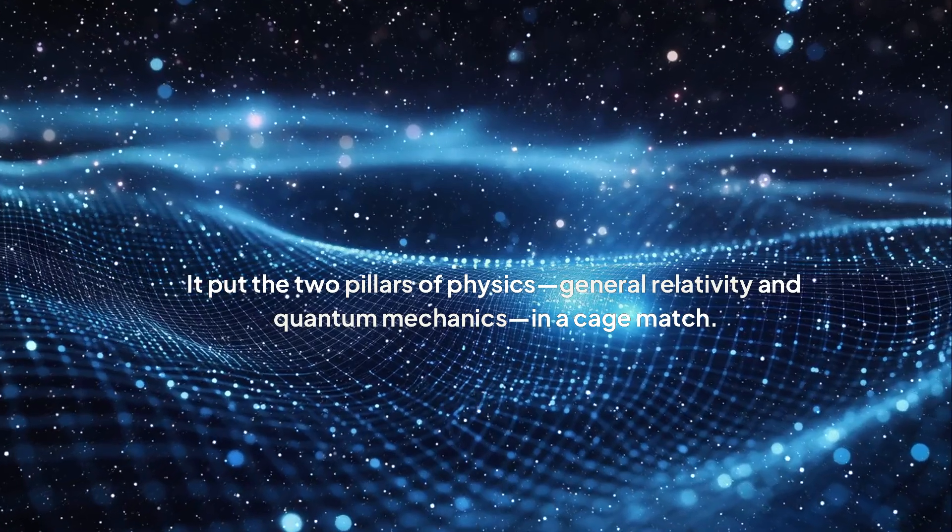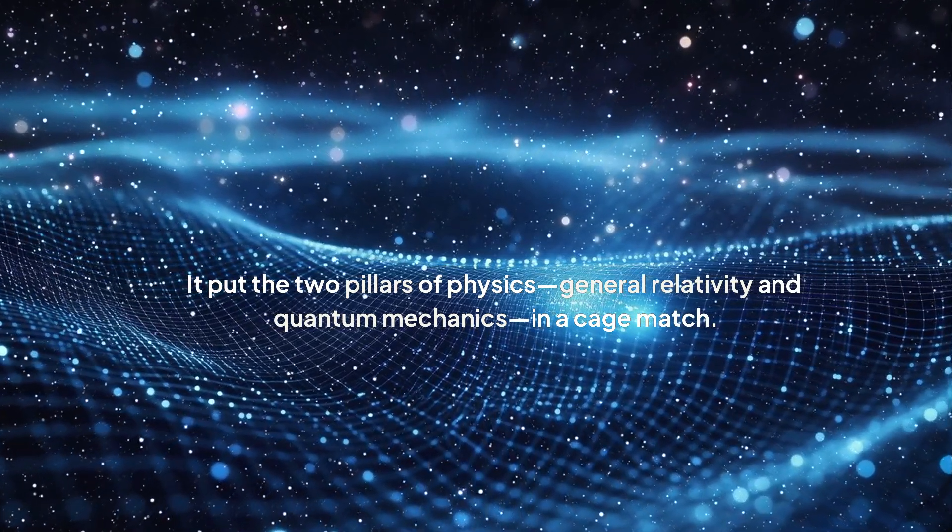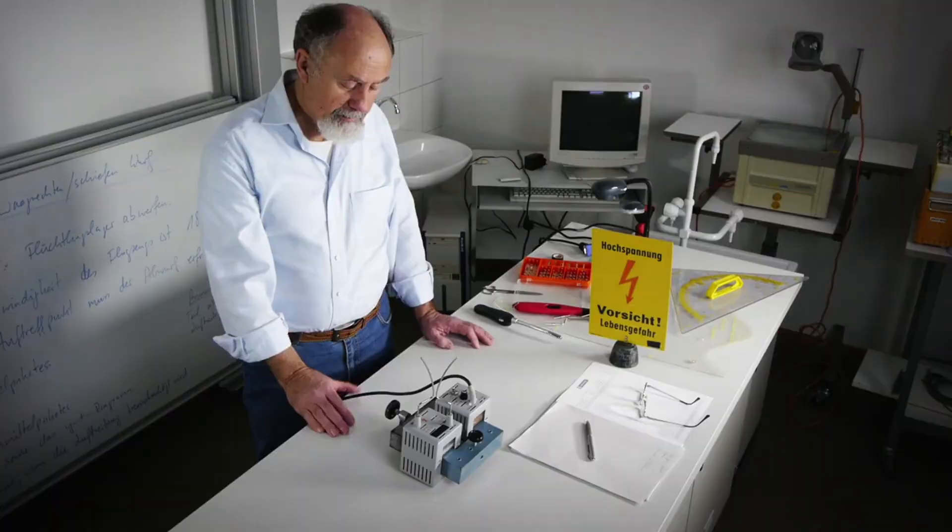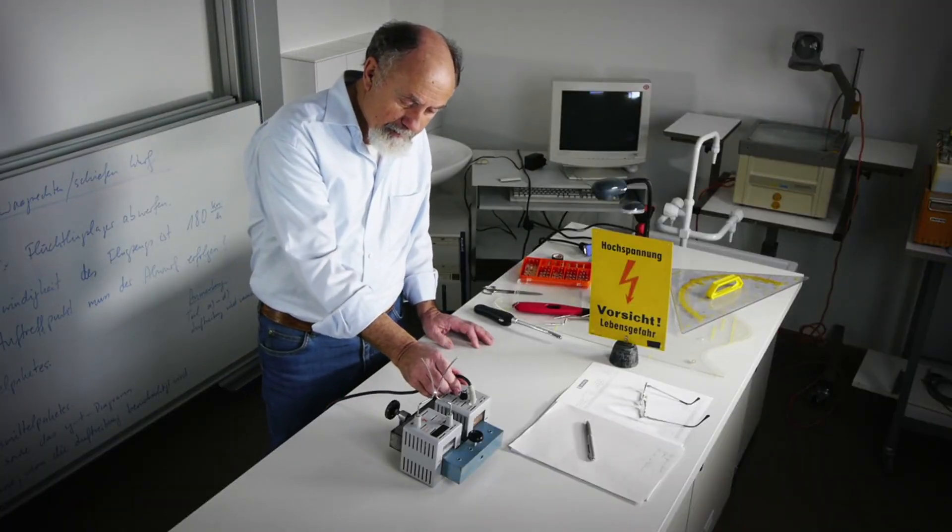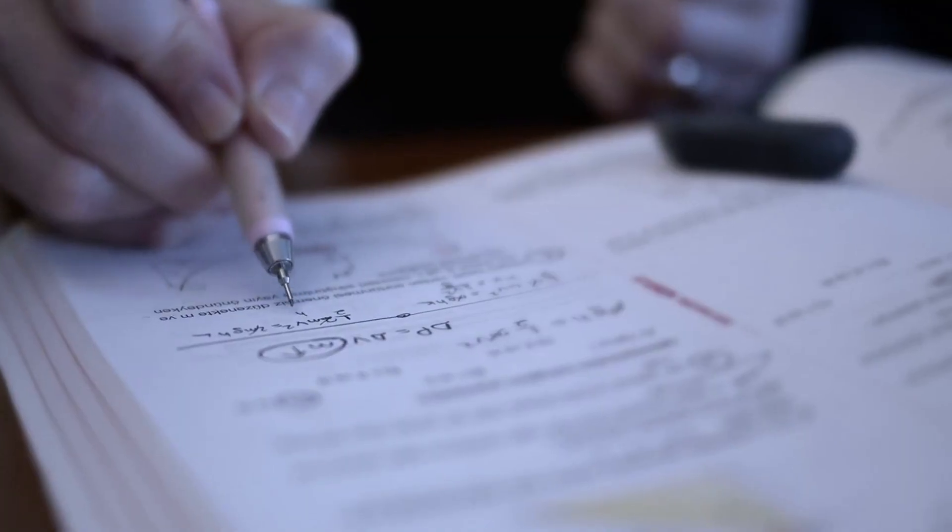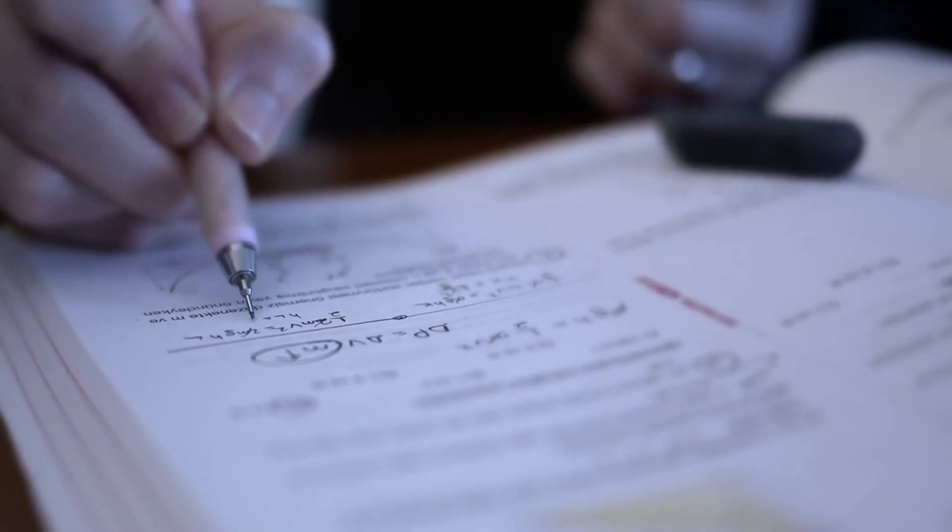It put the two pillars of physics, general relativity and quantum mechanics, in a cage match. Hawking's work meant one of them had to be wrong. For almost 50 years, physics was broken, and nobody knew how to fix it.